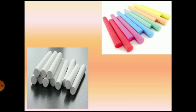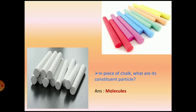Now, in this slide, we have pictures of chalk—one is white chalk, another is colored chalk. Let me ask you: in a piece of chalk, what are its constituent particles? Yes, constituent particles. You should remember from earlier. The answer is molecules. Both white chalk and colored chalk contain the constituent particles called molecules. Focus on the word constituent particle.